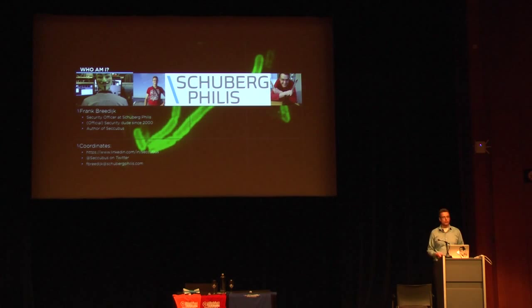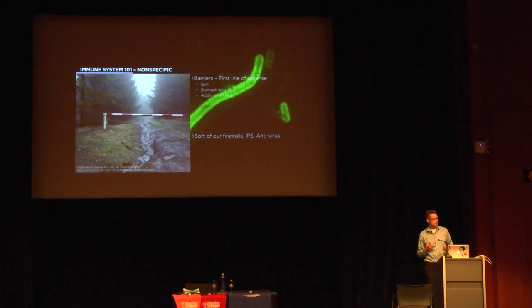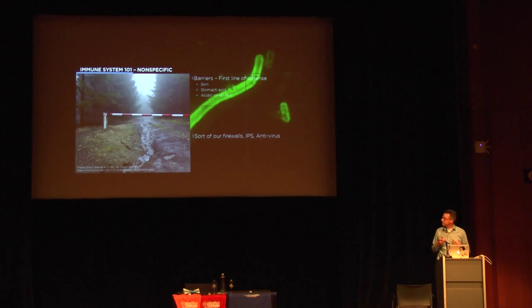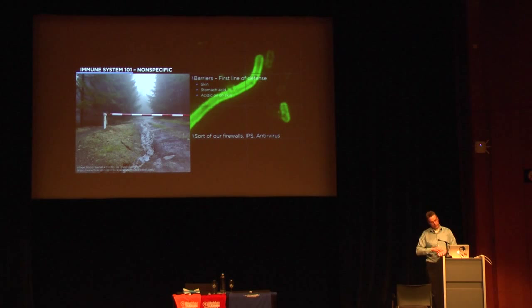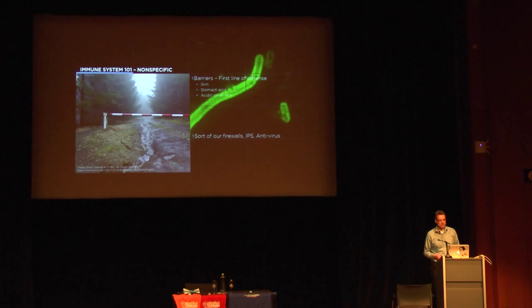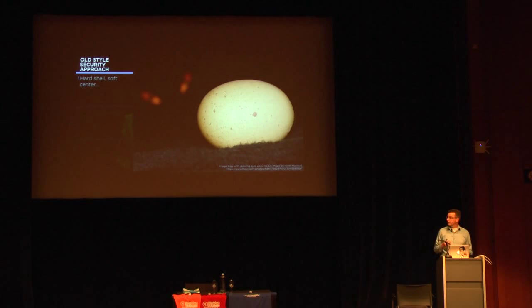The most basic immune system is the non-specific immune system and it consists of two parts. First, it consists of barriers — things like our skin; I wouldn't look as pretty without it, but more importantly I'd get infections very quickly. It's also things like our stomach acid and the acidic oil on our skin which helps keep out intruders. In a sense it's like our firewalls, our intrusion prevention systems, our antivirus.